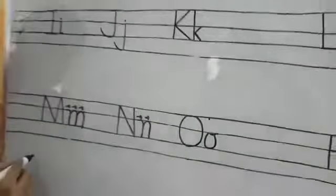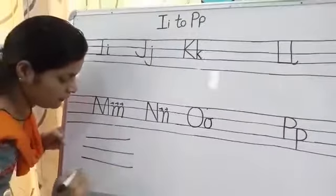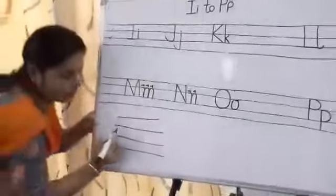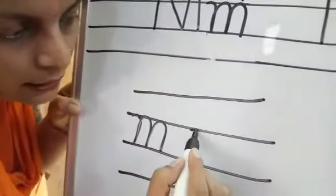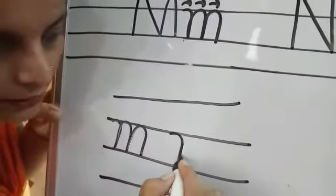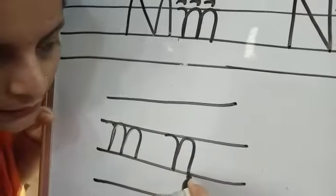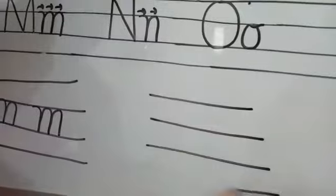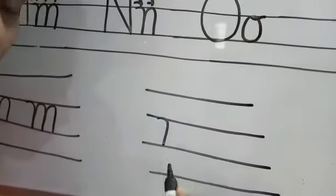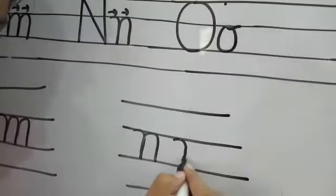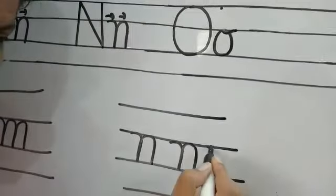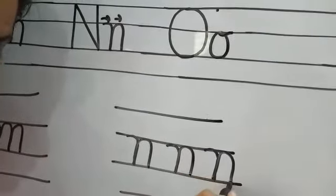For small letter M and N, let's try again. For small M: start from here, again start from here, take a turn like this — three turns. For small N: one and two turns. Okay, try it well.